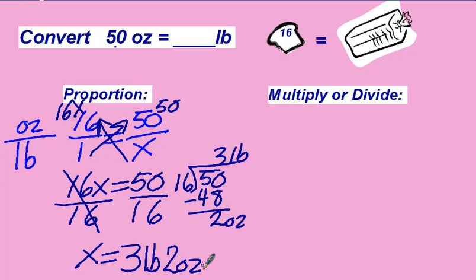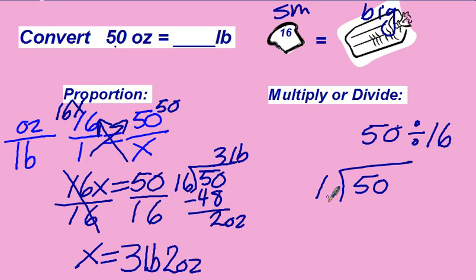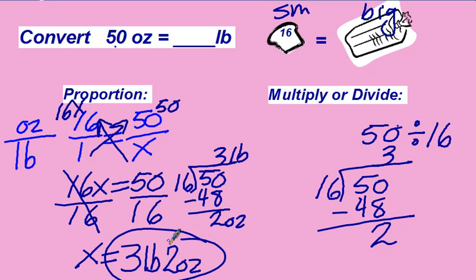In the same way, you could use big to small, small to big. We are going from small ounces to the larger loaf to the pounds. So we're going from small to big, we should divide. That tells us, take what we have, 50, divided by our relationship, which is 16. And again, we do 50 divided by 16, and we will get 3 with 2 ounces left over, 3 pounds, 2 ounces.